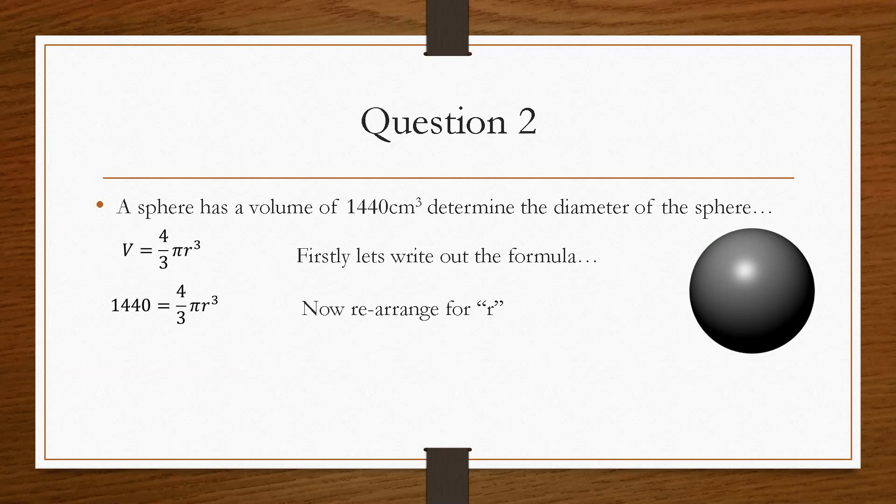So what we're going to do is we're going to do the 1,440 times 3 because this is divided. So that will go over as times and then we'll divide it by 4π. And that will give us an r³ value of 343.77. Now, we have to get the cubed across to the other side. So that will go over as the cubed root. So the cubed root of 343.77 gives us a radius of 7.